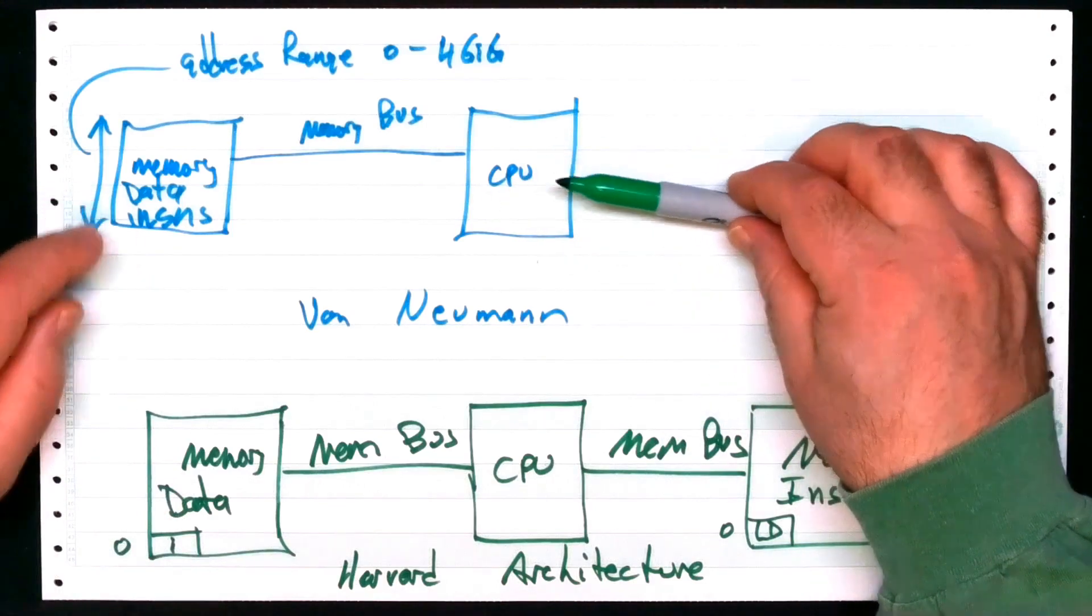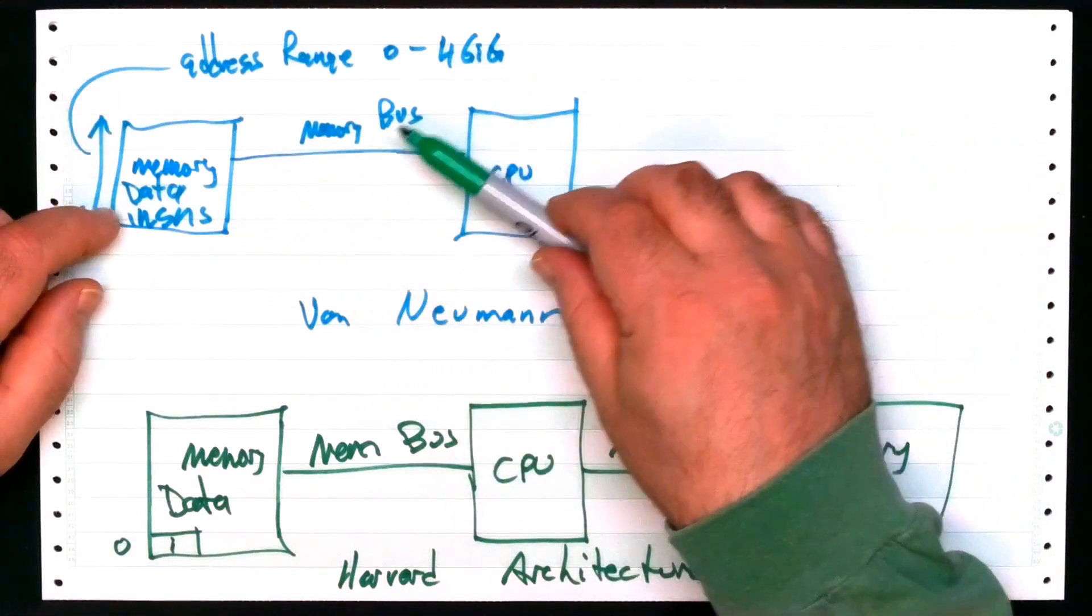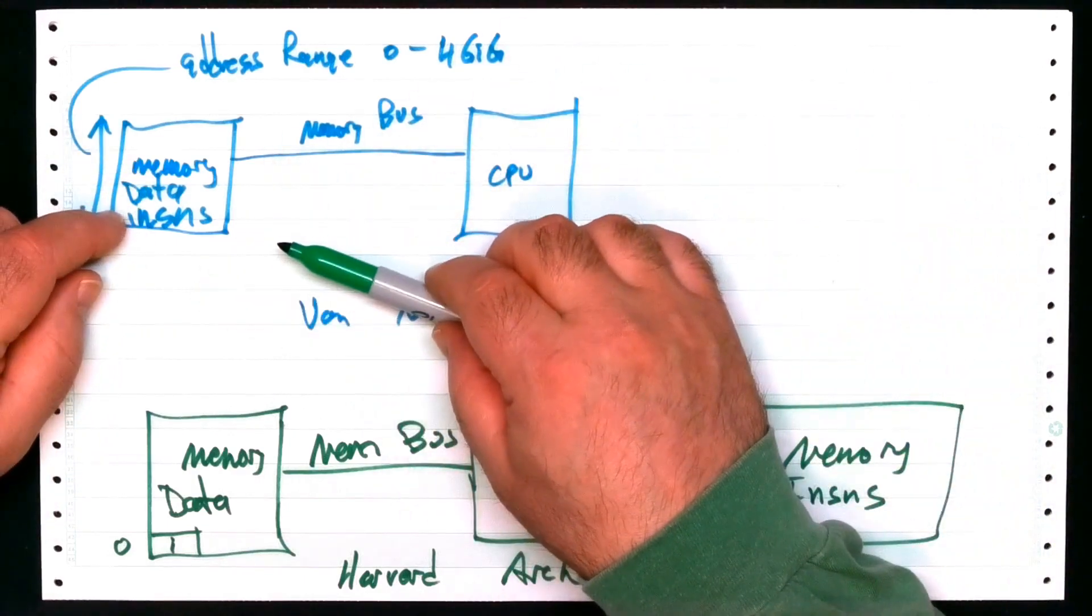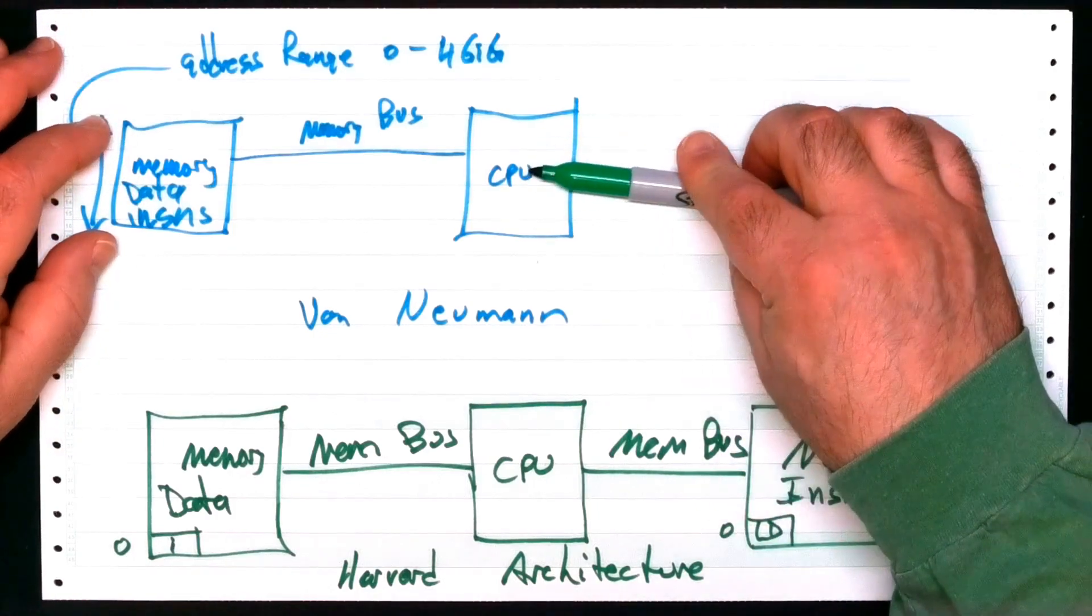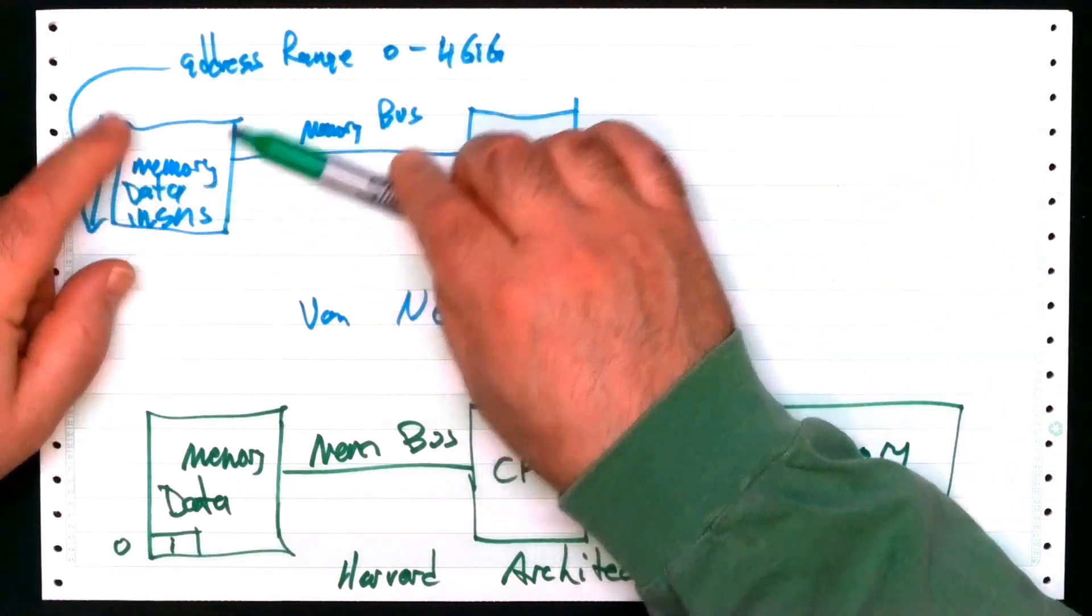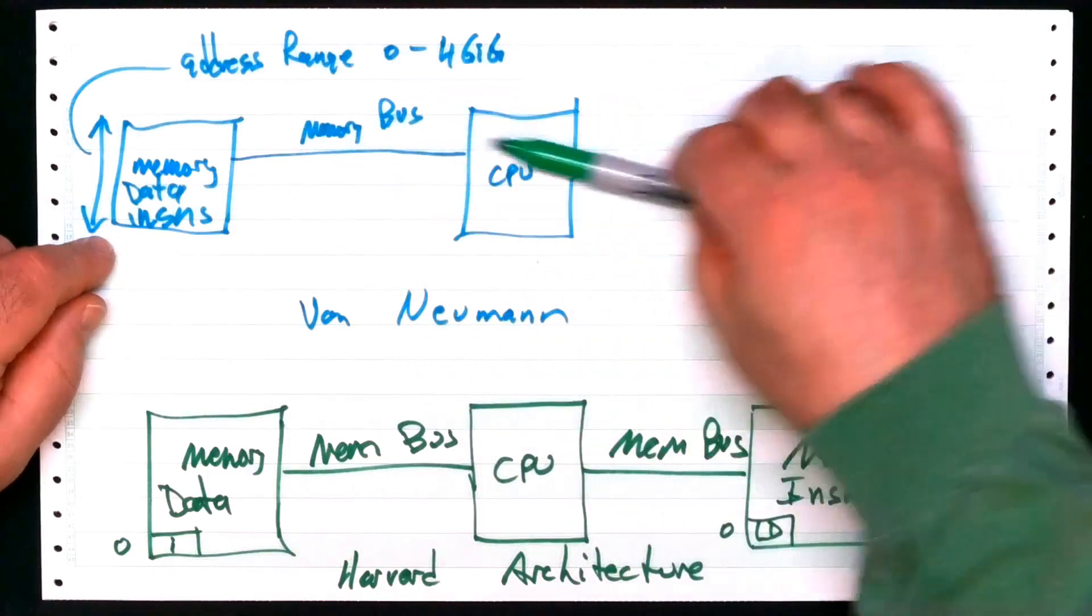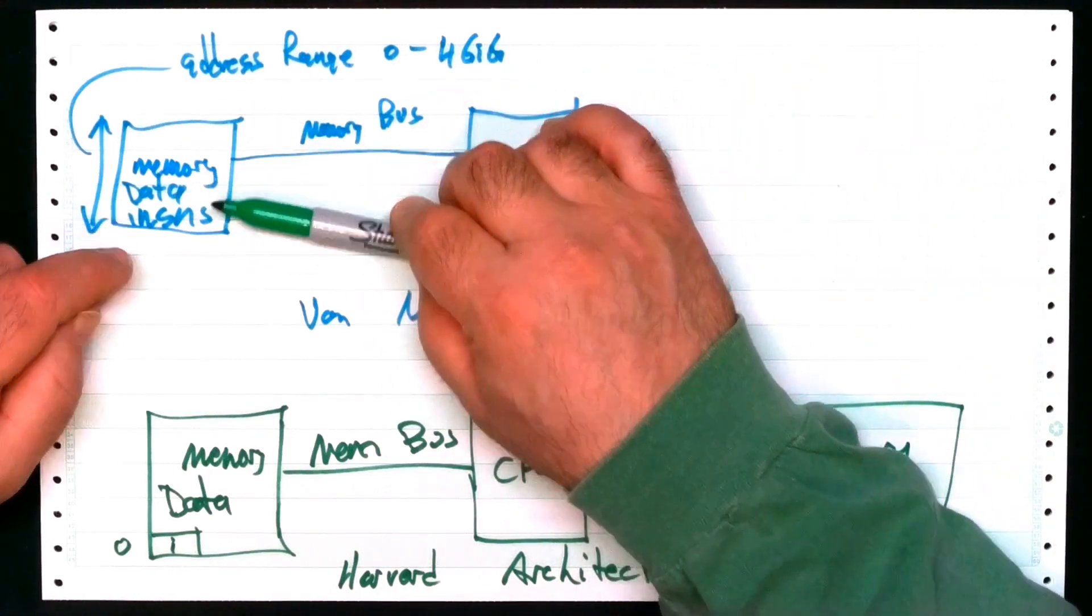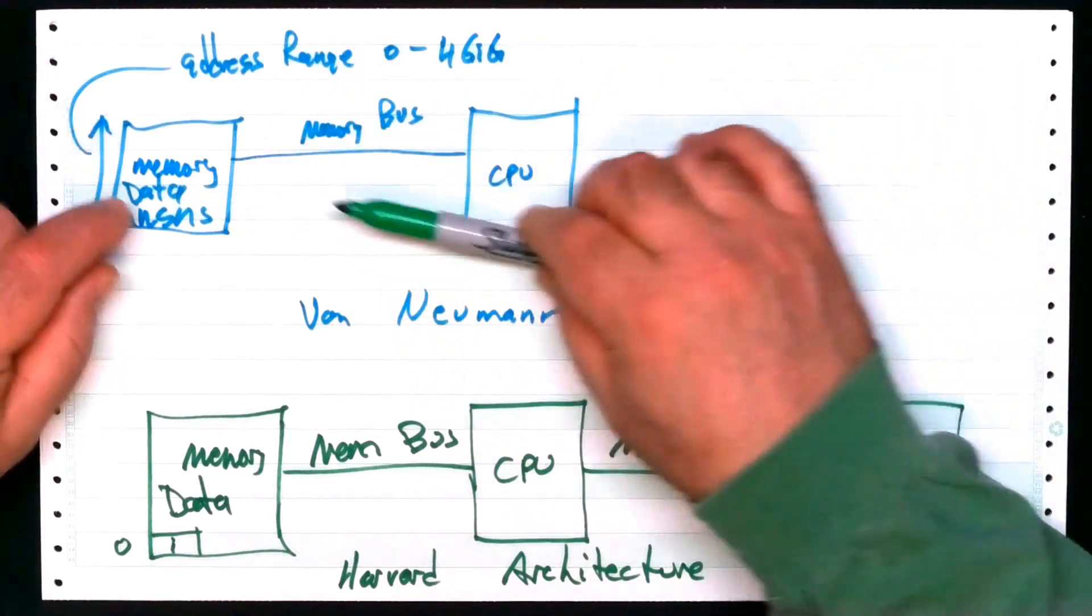This one up here, no matter what you do, everything's in the same address space and any address and any register could be used for anything whatsoever. It's also possible in this kind of a design where you can write a program that's easy to modify itself because you can actually write programs that generate instructions and poke them in memory and then tell the CPU to execute them, all treating it in the same way. Instructions, data, they're all treated the same way in this machine. Easy to write viruses.